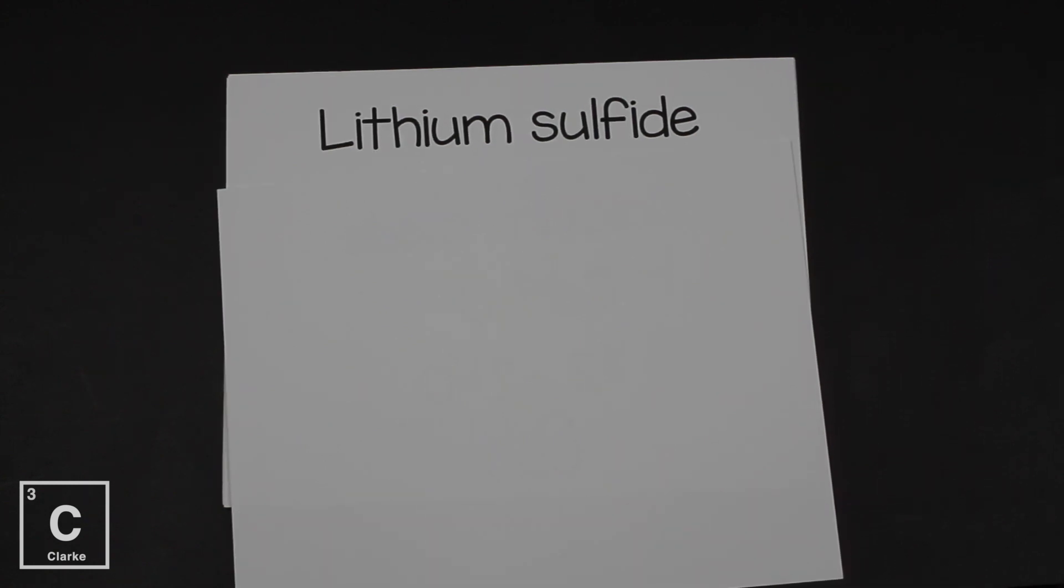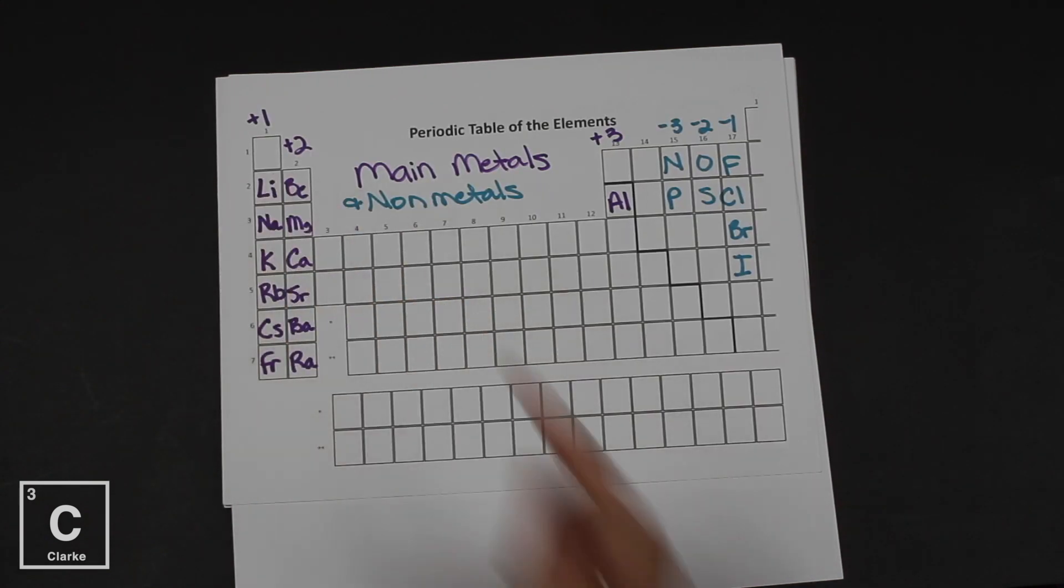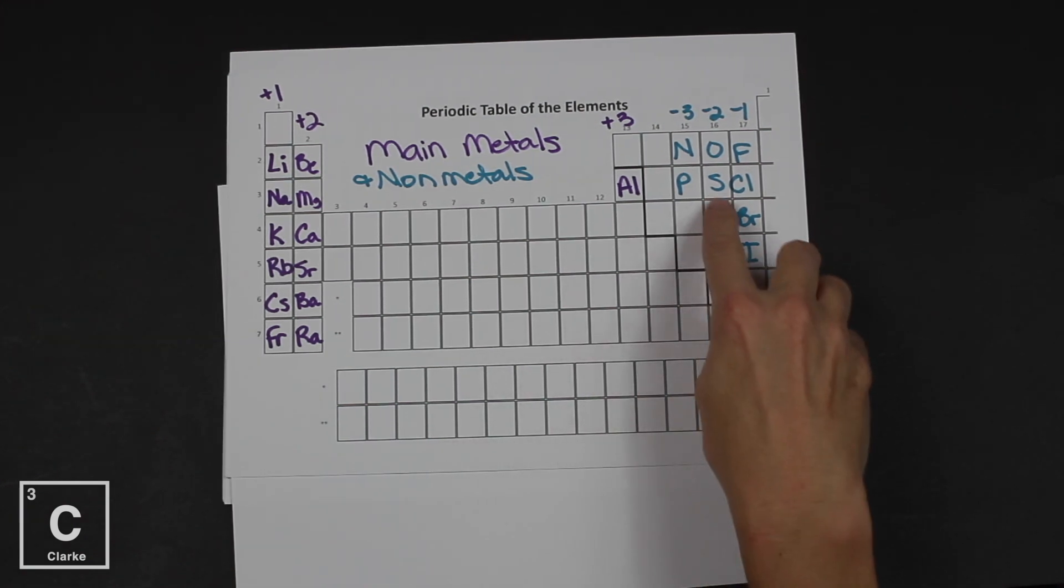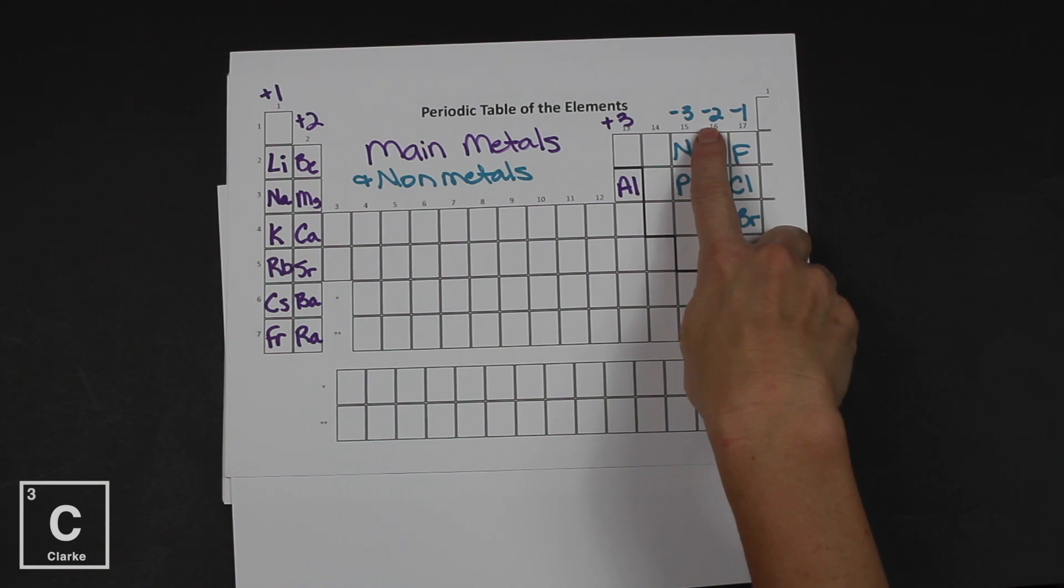So our compound's formula is just CaO. Because when calcium is in the presence of oxygen, they're going to come together in a one-to-one ratio. Lithium sulfide. Let's find lithium on the periodic table. Lithium. It's a main group metal. It has a charge of plus one. Sulfide, that just means sulfur. Sulfur is a minus two.